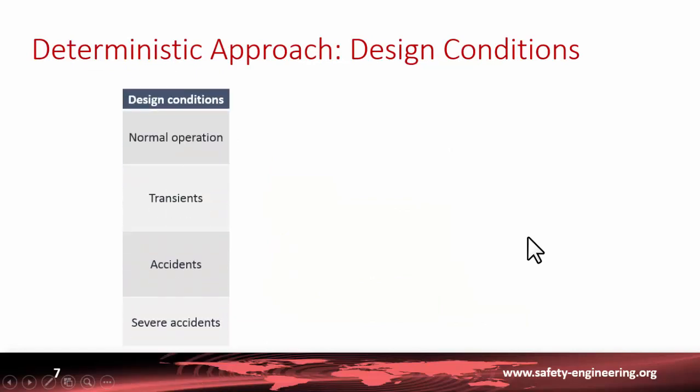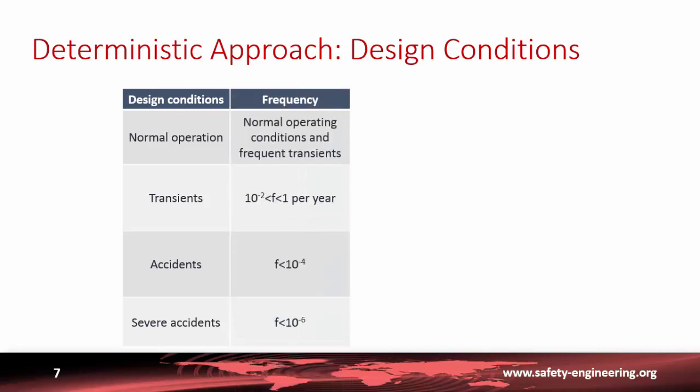This is the way we define what we call the design conditions, which include normal operation, transients, accidents, and severe accidents. Normal operation is something that happens permanently or includes frequent transients. Transients could happen once a year or once in a century. Accidents should have a probability less than 10 to the minus 4, that is one every 10,000 years. For severe accidents, the objective is to have a frequency less than one in a million years.